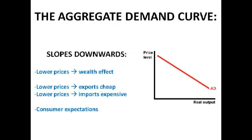This is your aggregate demand curve, and just like the demand curve you're using in macroeconomics, it slopes downwards. Why does it slope downwards? When there's lower prices, there's a wealth effect. Consumers buy more at lower prices — they feel better off. If they've got lower prices, they can buy more with the same amount of money.